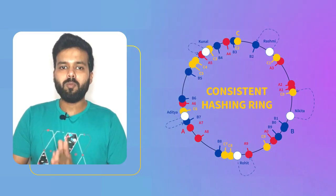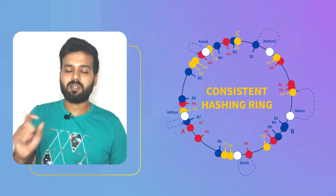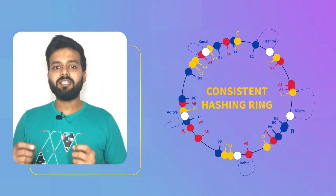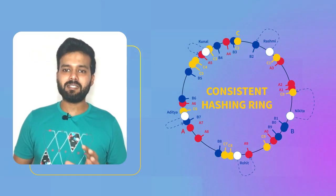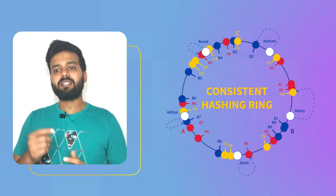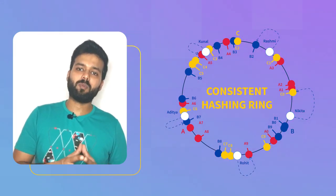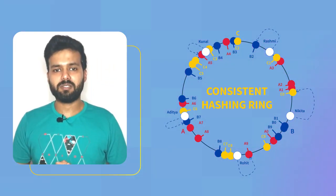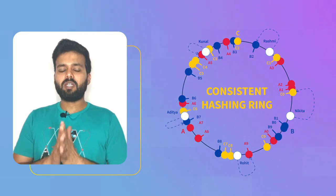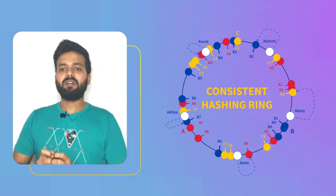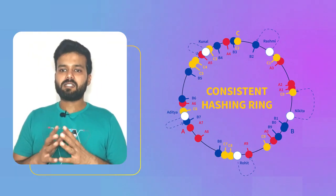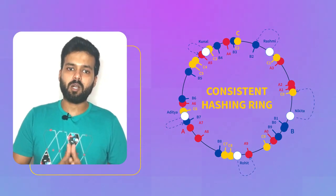Now if server B is twice as powerful as the rest, it could be assigned twice as many labels. As a result, it would end up holding twice as many objects on an average basis. This way we can be sure that the keys are evenly distributed and servers with better resources are holding more amount of data.